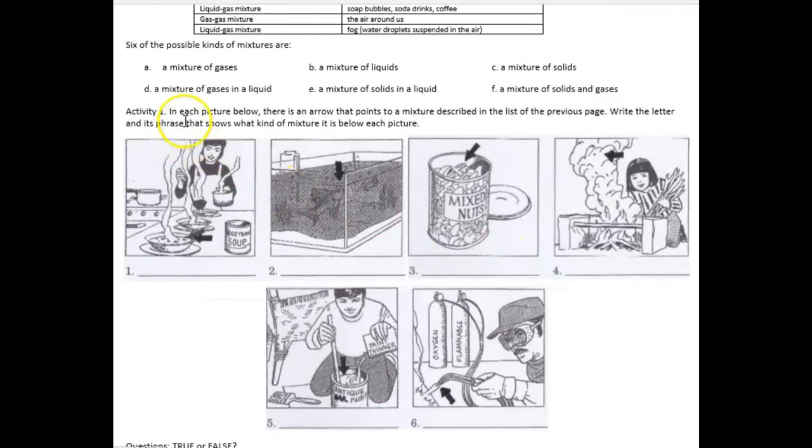So, for your activity number 1, in each picture below, there are 6 pictures numbered 1 through 6. There is an arrow that points to a mixture described in the list of the previous page. Write the letter and its phrase that shows what kind of mixture it is below each picture. You will choose your answer from letters A through F. Look carefully at the picture to identify what kind of mixture is shown in the sample.